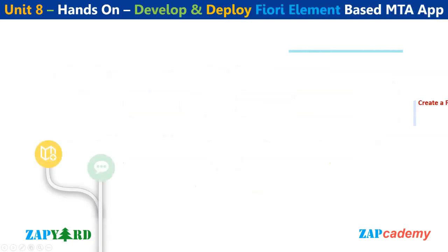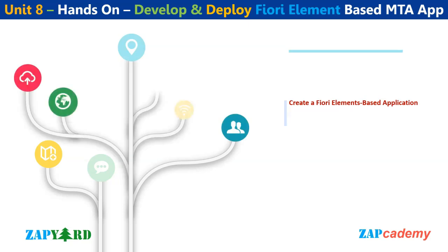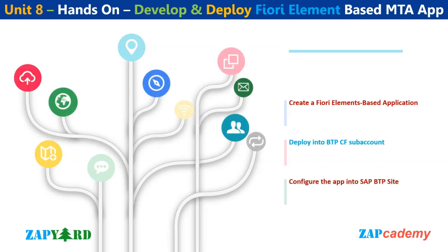Our app development journey continues with the next hands-on session: developing our third app, which will be a Fiori element-based MTA application. We will also learn how to deploy a Fiori element-based MTA app to the BTP Cloud Foundry sub-account, and configure this Fiori element-based app into the SAP BTP site and launchpad. After creating three different types of apps, all participants will be capable of handling development and deployment of any app in real client projects on the SAP BTP platform.